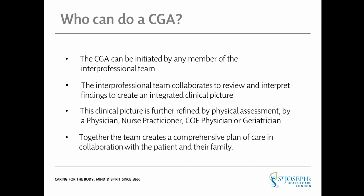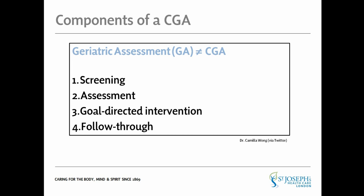A comprehensive geriatric assessment is different from other assessments in that it includes both screening and assessment as well as goal-directed intervention and follow-through. CGA is both a diagnostic and treatment process that identifies medical, psychosocial, and functional limitations in order to develop a coordinated plan of care to maximize overall health with aging.